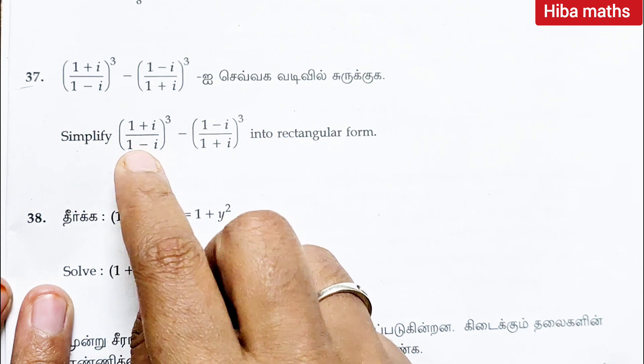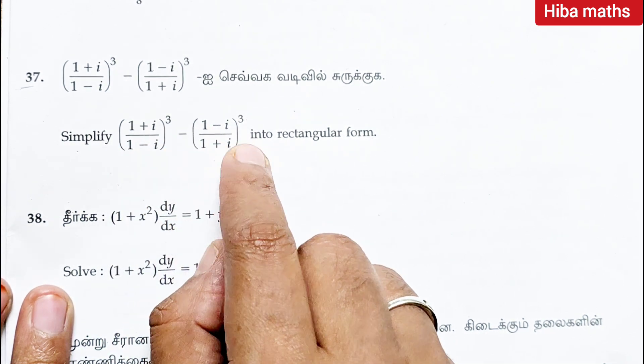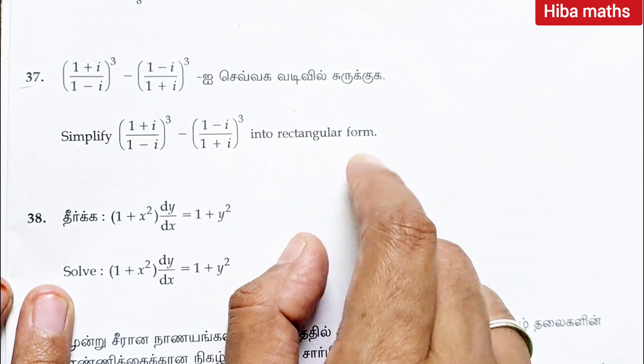Question 37: simplify 1 plus i divided by 1 minus i cube minus 1 minus i divided by 1 plus i whole cube into rectangular form.